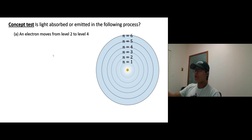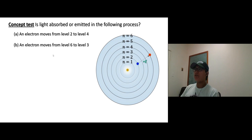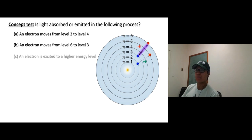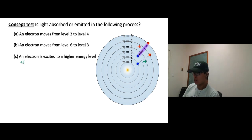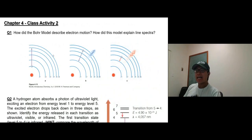Is light absorbed or emitted in these cases? A) An electron moves from level two to four — going up like climbing stairs takes energy, so this one absorbs energy. B) An electron moves from level six to level three — coming down releases energy, so this one emits energy. C) An electron is excited to a higher energy level — same idea, going up absorbs energy.